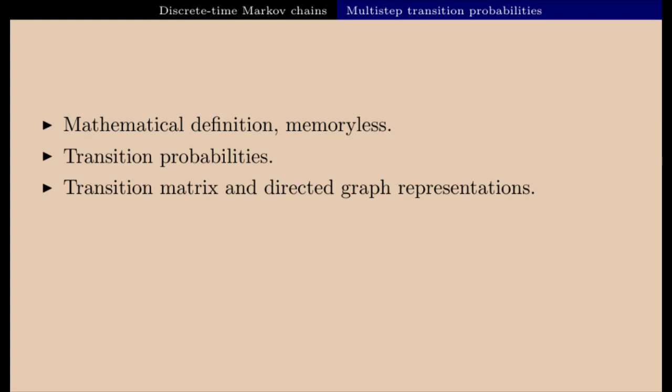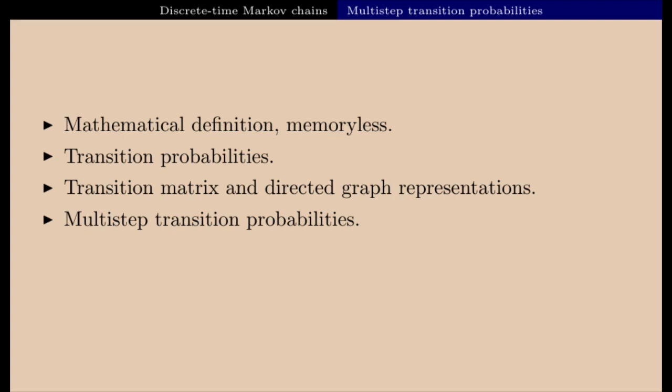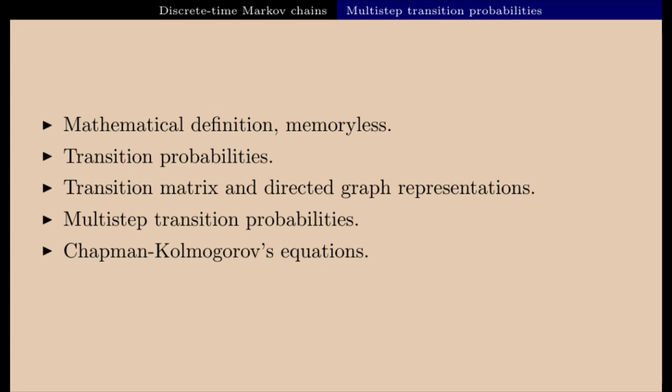Then we'll talk about an extension of the notion of transition probability called multi-step transition probabilities. Then I will talk about the Chapman-Kolmogorov equations that show how those multi-step transition probabilities are connected to each other. And finally, I will prove one theorem showing how to compute those multi-step transition probabilities using Chapman-Kolmogorov equations and the transition matrix.